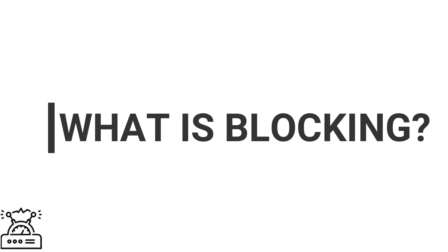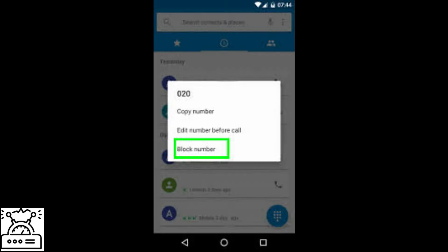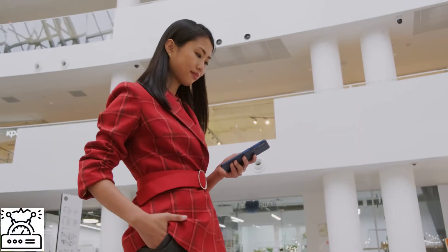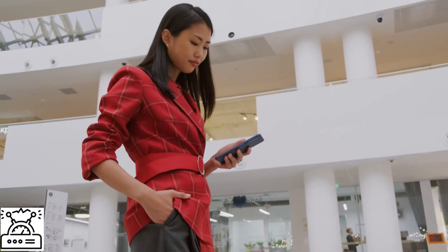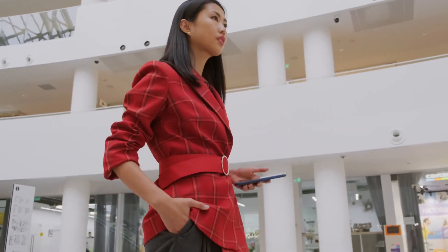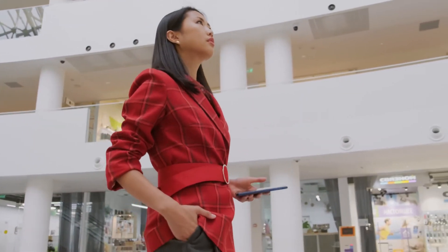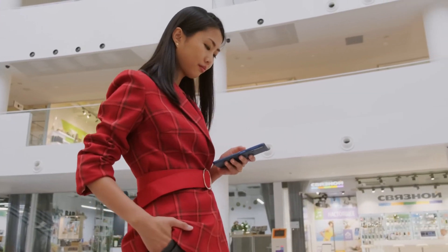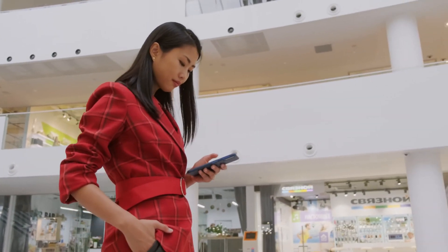What is blocking? We all know what blocking is, however for those who don't know, let us talk about it. Blocking is a function that enables the user to block any number from their device so that the person who owns that number cannot annoy them.